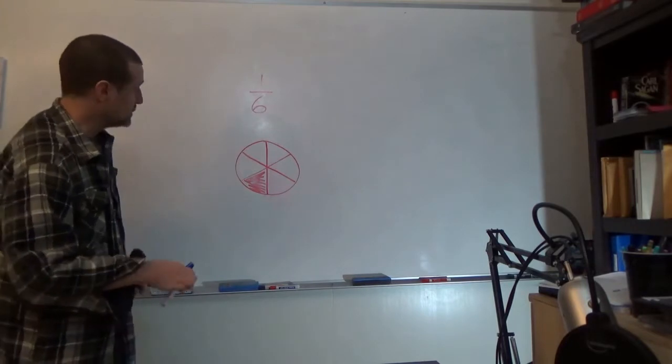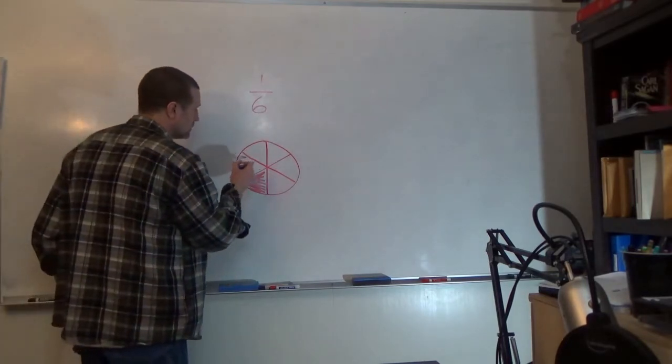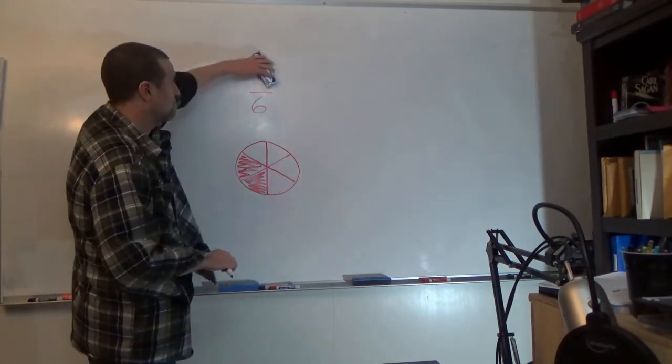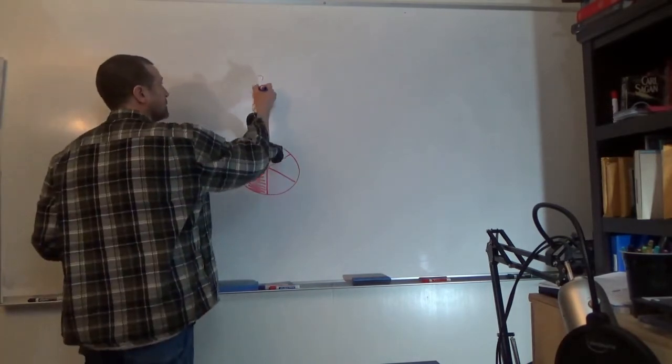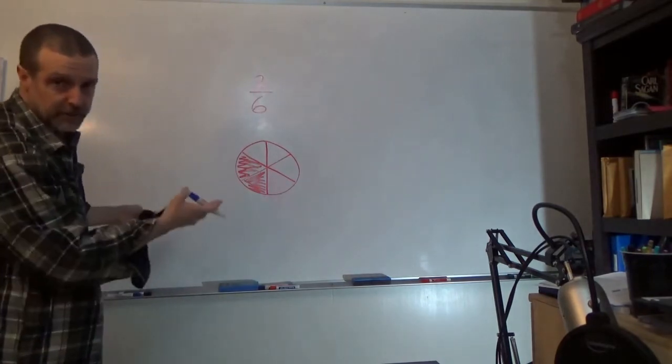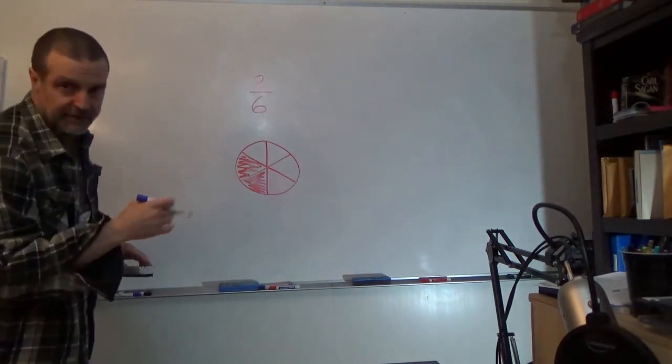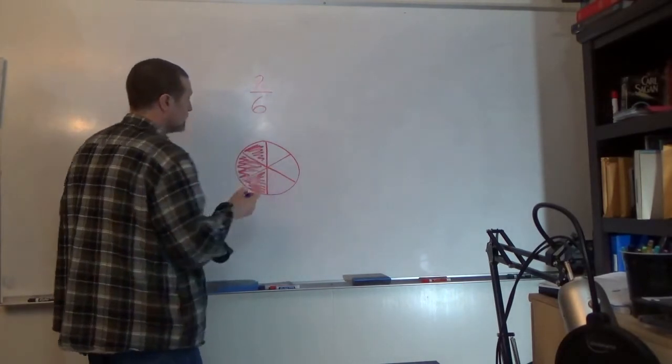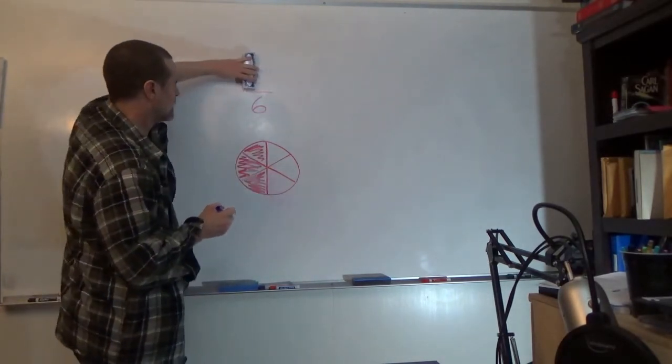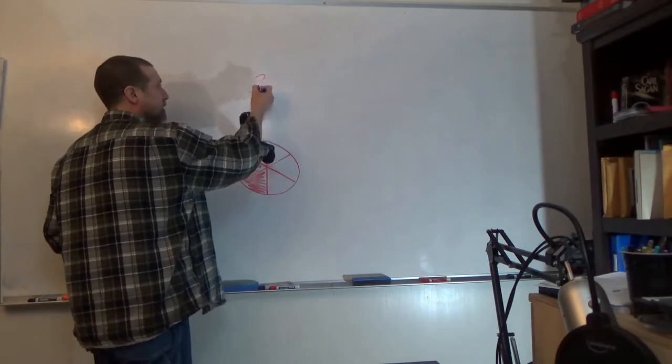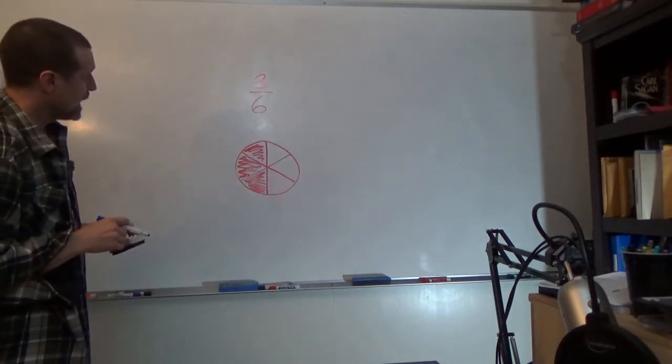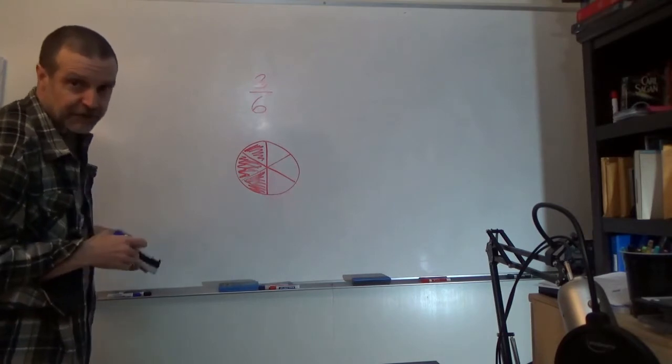So if I ate two pieces of pizza, then we would say that I had two-sixths of the pizza. If I had three pieces, then we'd say that I had three-sixths of the pizza. And this is how we think about fractions.